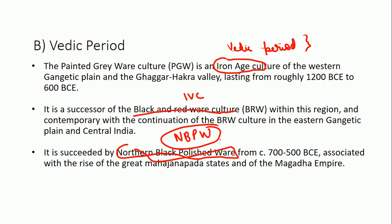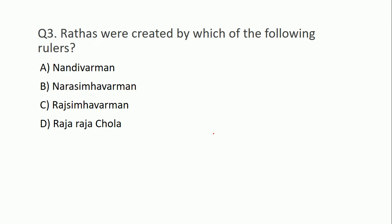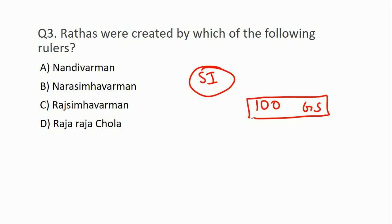Third question: Rathas were created by which of the following rulers? Options are: A) Nandi Varman, B) Narasimha Varman, C) Raj Simha Varman, D) Raja Raja Chola. Temple से related questions South India से ज़्यादातर आते हैं। मैं आपको suggest करूंगा धीरे-धीरे एक-एक temple करते रहें। जब 100 questions GS में हों तो कुछ छोड़ने का chance नहीं - सारे topics कवर करने होंगे।